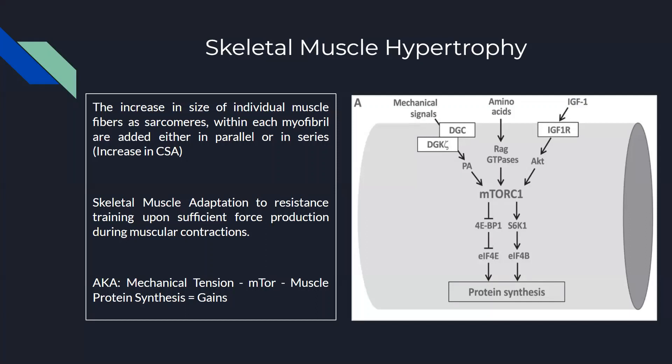Now one of the most important skeletal muscle adaptations which happens when we start strength training is skeletal muscle hypertrophy. So first let us define what exactly skeletal muscle hypertrophy is. Muscle hypertrophy is the increase in the size of muscle fibers — more specifically, the increase in the size of each muscle fiber found in fascicles.